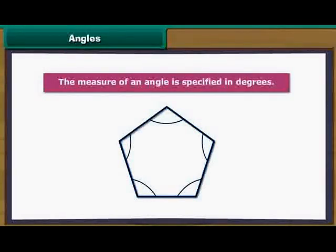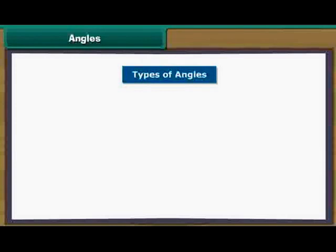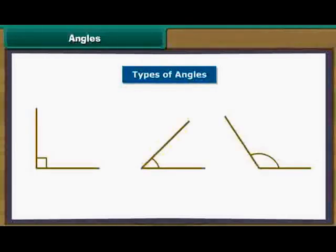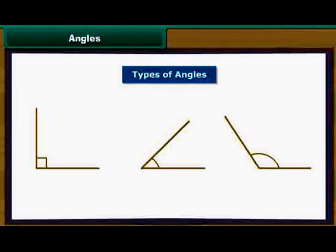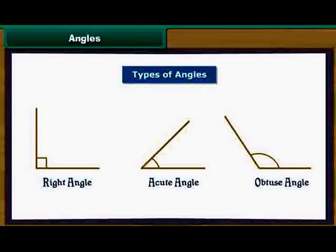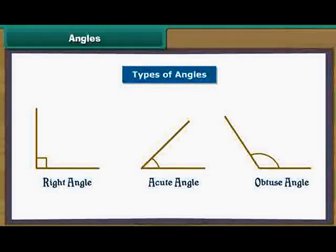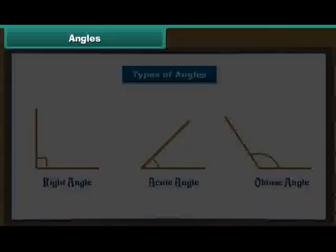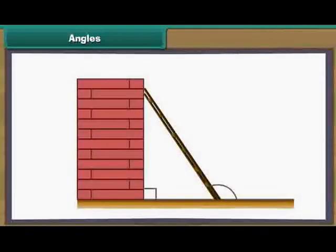Look at this scene. In this, a ladder is standing against the wall. Let us look at three angles. First, the angle which the wall makes with the ground. Second, the angle which the ladder makes with the wall. Third, the angle which the ladder makes with the ground.